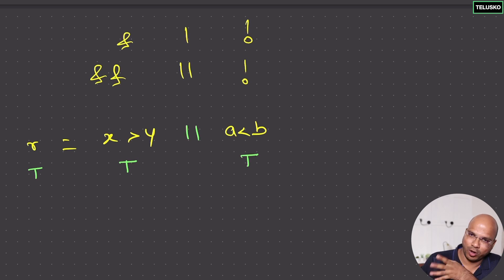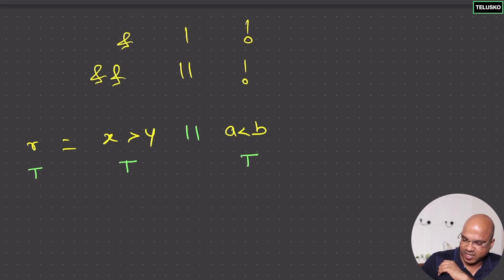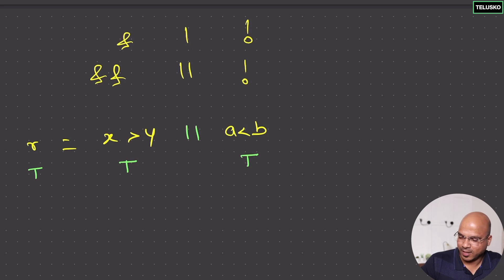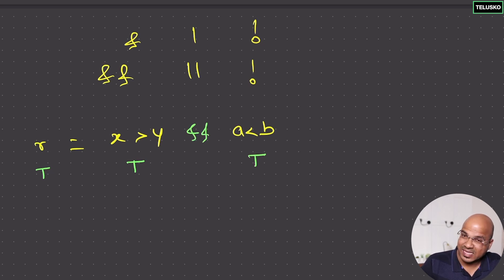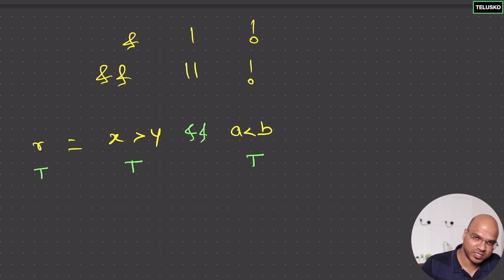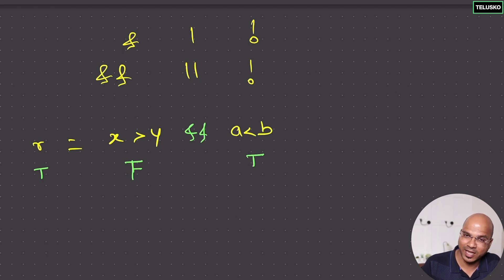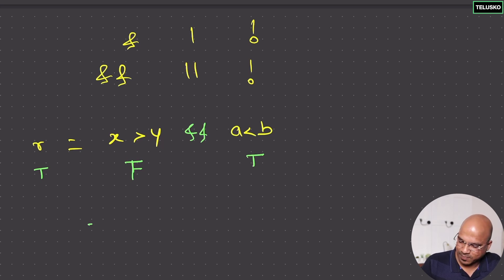With OR, if the first condition is already true, it will not even check the second one — that's why it's called short-circuit, you're saving time by taking a shortcut. With AND, if the first condition is false, it will not check the second one either, because the output is already going to be false. So from this point we'll always use double ampersand for AND and double pipe for OR.